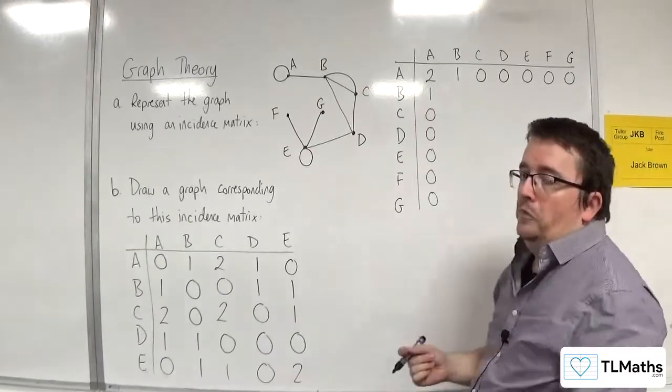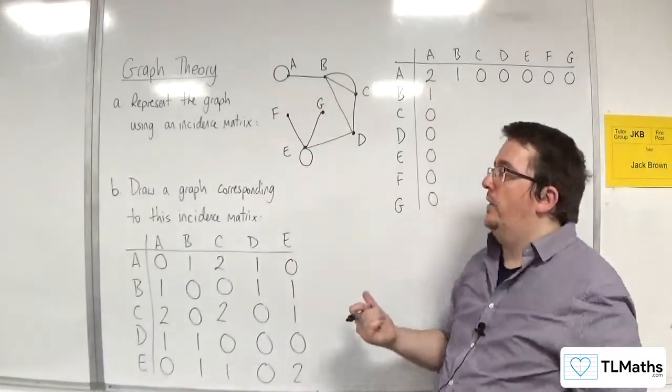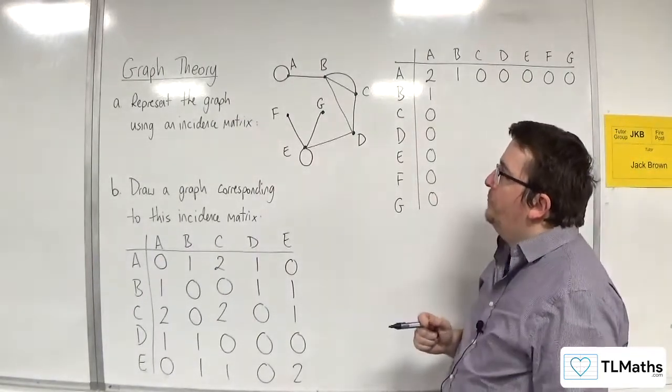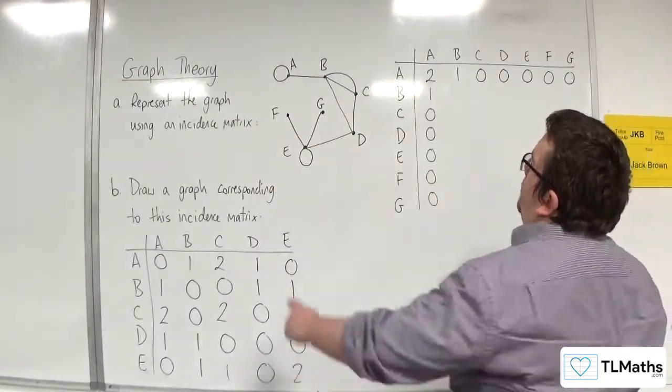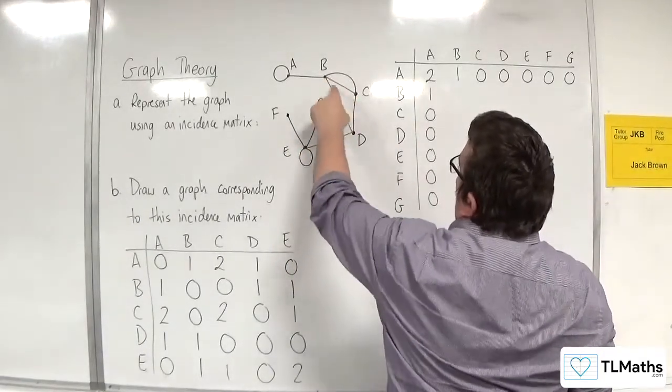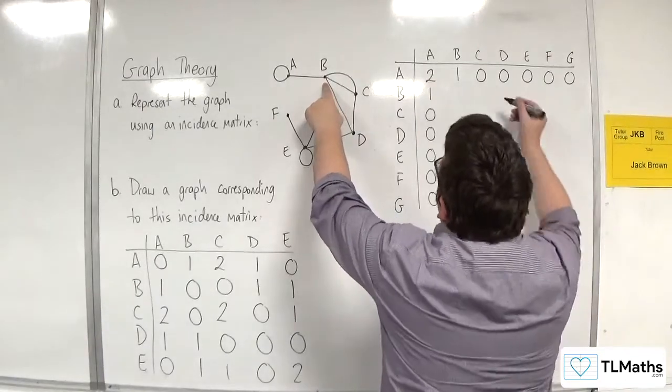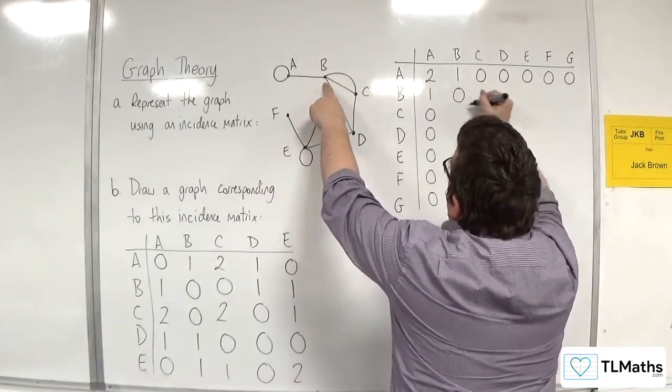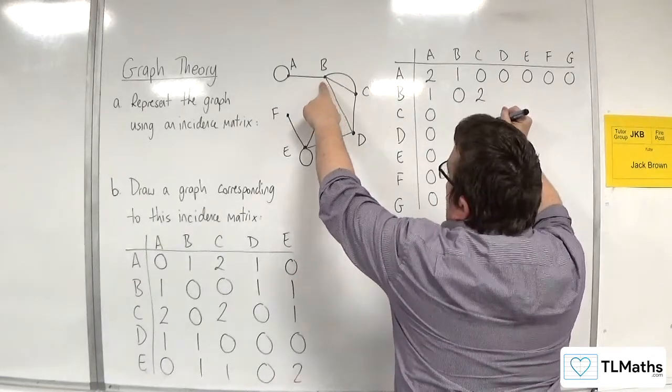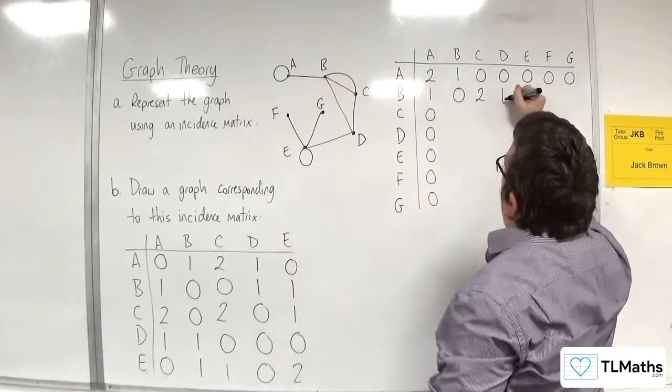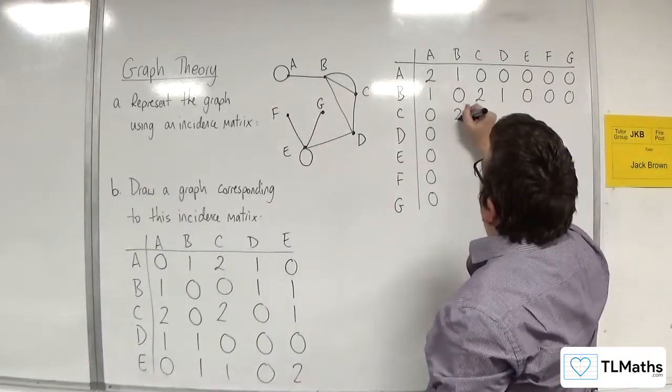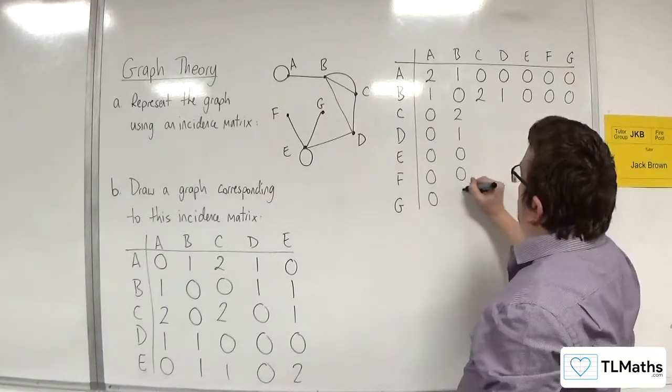The good thing is this is a symmetric matrix, so once I've done one row, I can do the column. If we look at B, B is connected to A. B is connected to C by two separate edges - multiple edges there. It's not connected to itself, so we put zero there and two there. It's connected to D by one edge but not directly connected to E, F, or G. So 2, 1, 0, 0, 0.